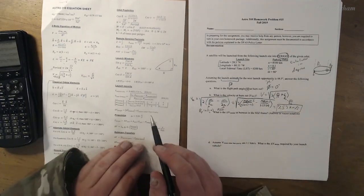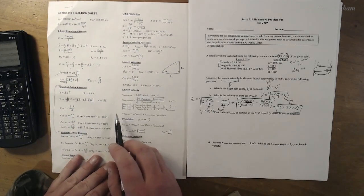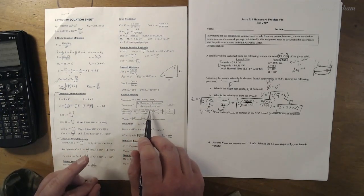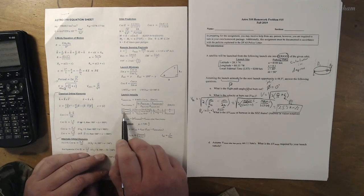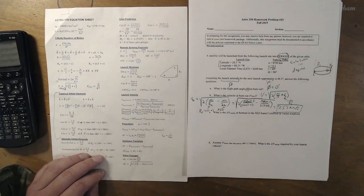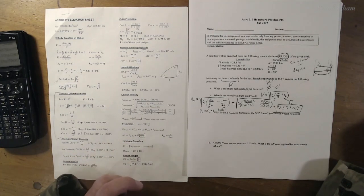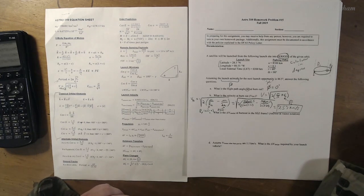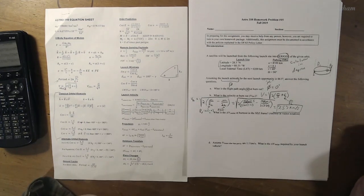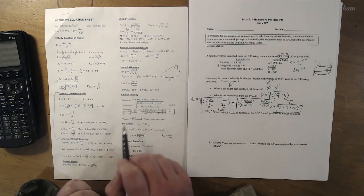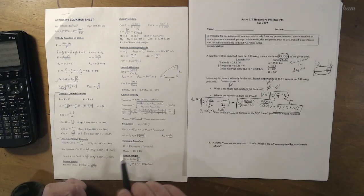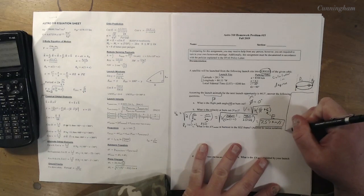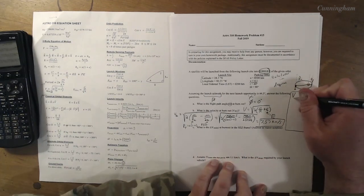It's focused at the launch site. Zenith is directly up, the direction the rocket is launching. South and east are cardinal directions. I'm going to do a little housekeeping before I even plug in anything. Delta V needed in the south direction is negative VBO cosine phi cosine beta. Delta V needed east is VBO cosine phi sine beta minus the velocity of the launch site.